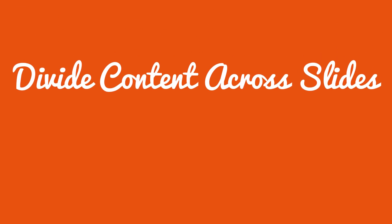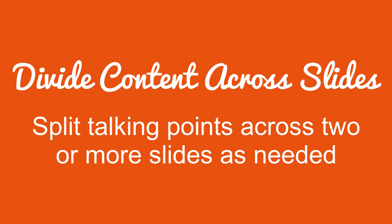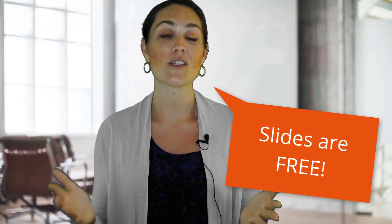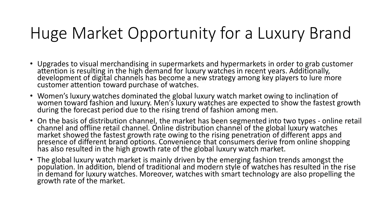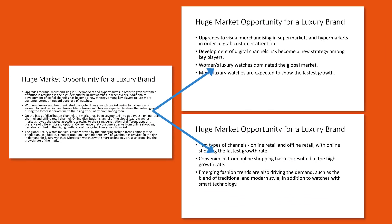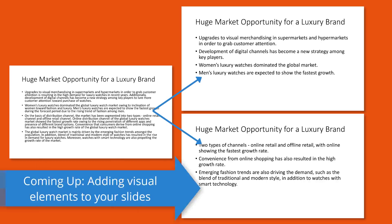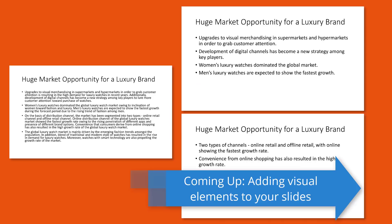Sometimes we need to keep more text on the slide than we'd like — maybe you can't pare it down because the presentation needs to stand on its own without you talking over it. The third way to handle content-heavy presentations is to divide it up into multiple slides. Oftentimes we feel we have to put everything on one slide, but slides are free, so go ahead and use more than one. In this example, we could simply break the slide into two slides, which gives us a lot more breathing room and will allow us to add visual elements to improve the design.